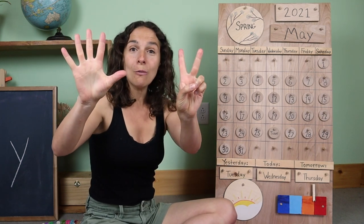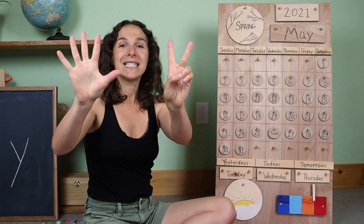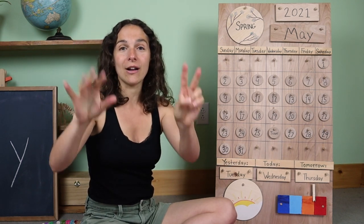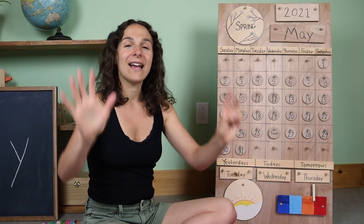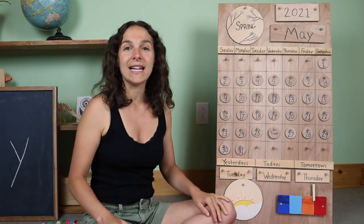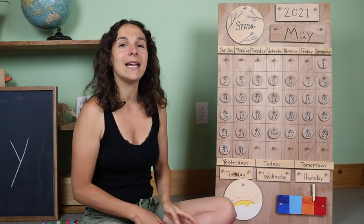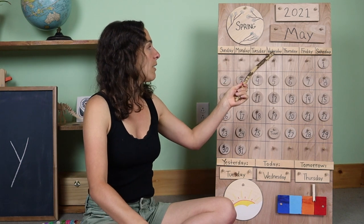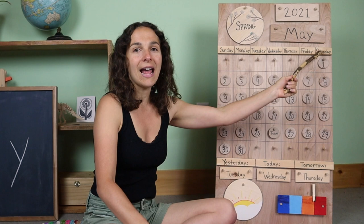Let's keep those five fingers up, but let's add two more fingers — now we have seven fingers. And we can sing the days of the week song. Are you ready? There are seven days, there are seven days, there are seven days in a week. Sunday, Monday, Tuesday, Wednesday, Thursday, Friday, Saturday.